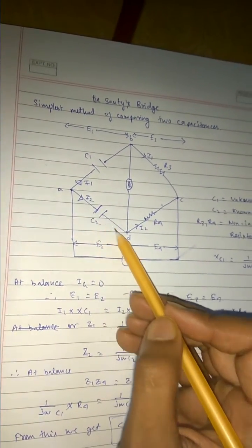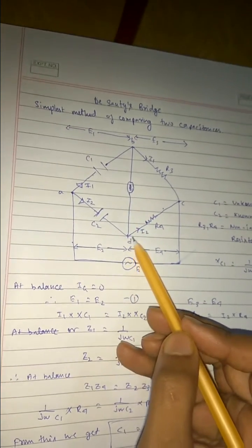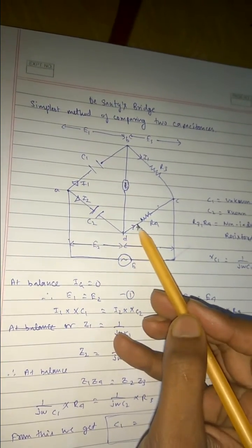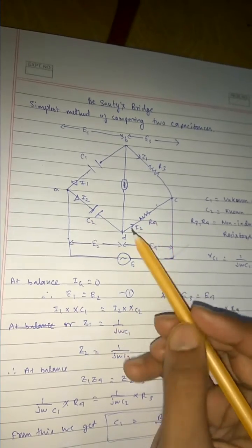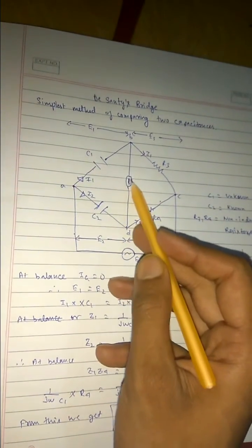Similarly this I2 current flows from here. Since there is no movement of current in this path, so I2 also moves freely, so this I2 and this I2 are same current. So at balance there is no deflection in the galvanometer or deflector, that is zero.